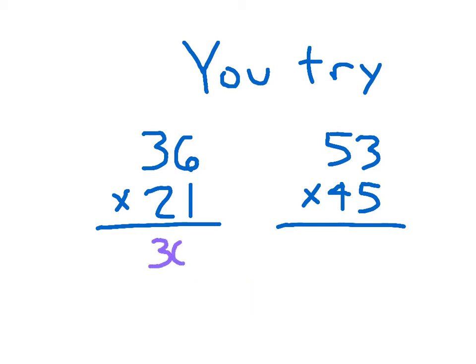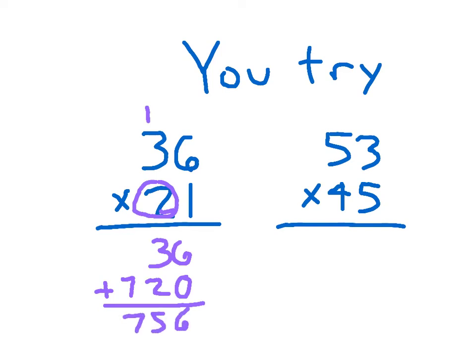Did you get 36 on your first line? That's 36 times 1. Now we're working with the 2, which is worth 20, so make sure to place a 0. 2 times 6 is 12: write the 2, regroup the 1. 2 times 3 is 6 plus 1 is 7. Adding them together carefully, I get 756.